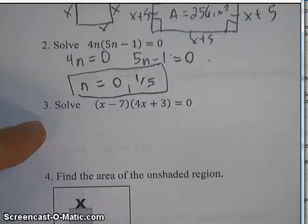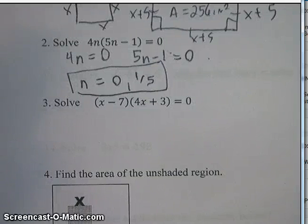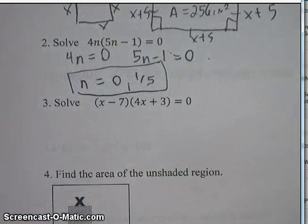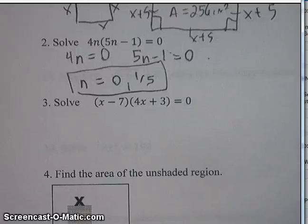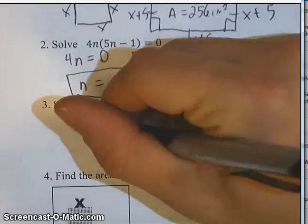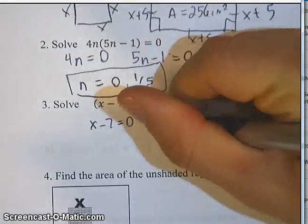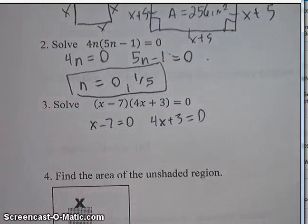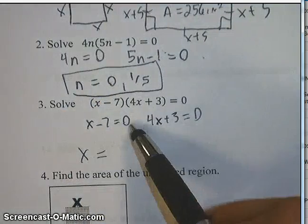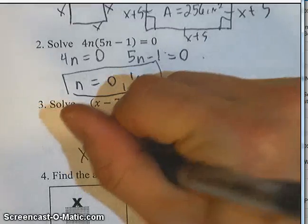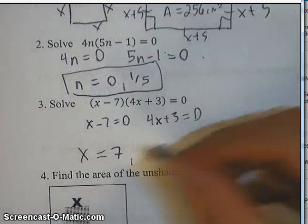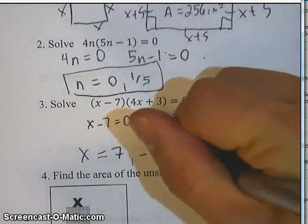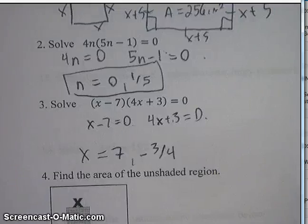Number 3: solve (x minus 7)(4x plus 3) equals 0. Once in factored form, set each factor equal to 0. x minus 7 equals 0 gives x equals positive 7. For 4x plus 3 equals 0, subtract 3 and divide by 4 to get negative 3 quarters, or negative 0.75 if you prefer.